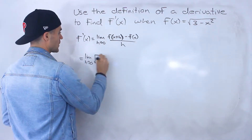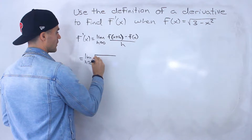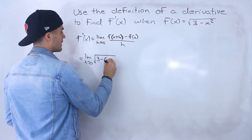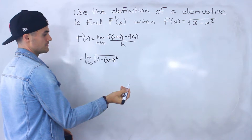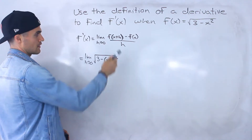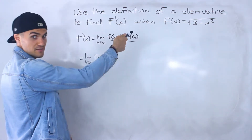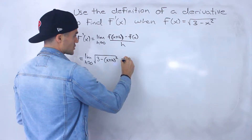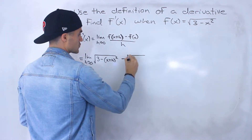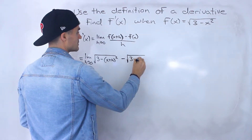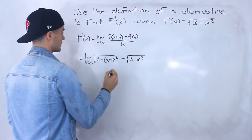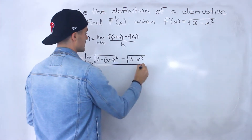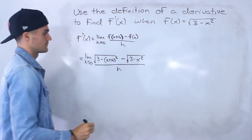So we would have the square root of 3 minus (x plus h) squared — that is f of x plus h — minus f of x which is just the square root of 3 minus x squared, and then this is all over h.